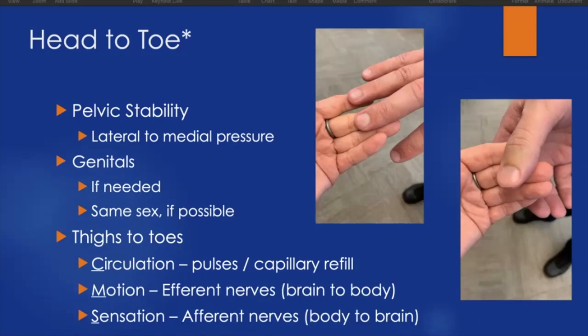Motion or movement checks the nerves that go from the brain to the body — when the brain tells the hands and feet to move, is that actually occurring? We often have the patient pull their toes up towards their nose with a little bit of counter pressure, and then push down as if on gas pedals with counter pressure. Sensation is simply whether they can feel us touching them — it checks different sets of nerves from the body up to the brain, and we check to see if the patient can feel us touching them in a specific place.